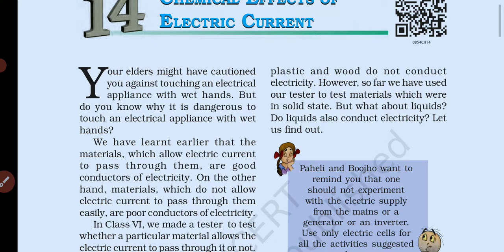इस chapter में हम electric current के chemical effect के बारे में जानेंगे। हमने हमेशा सुना है कि electric appliance को गीले हाथों से नहीं छूना चाहिए — यह बहुत ज्यादा dangerous हो सकता है। गीले हाथों से electric appliance छूने पर electric shock लगने का खतरा बढ़ जाता है। अगर voltage ज्यादा हो तो जान भी जा सकती है। Good conductor of electricity वो होता है जो electric current को आसानी से एक जगह से दूसरी जगह pass करे, और poor conductor वो होता है जो electricity को आसानी से pass नहीं करता।